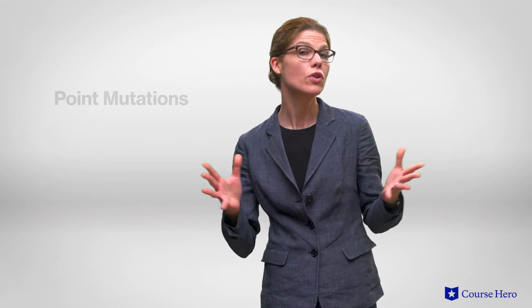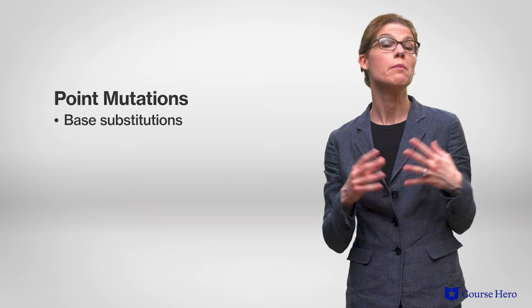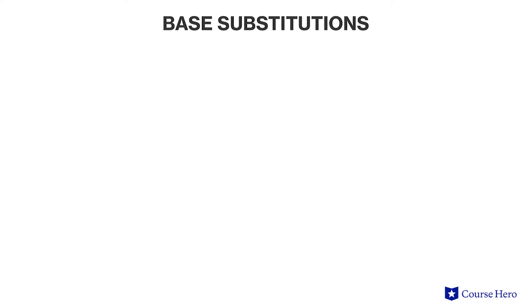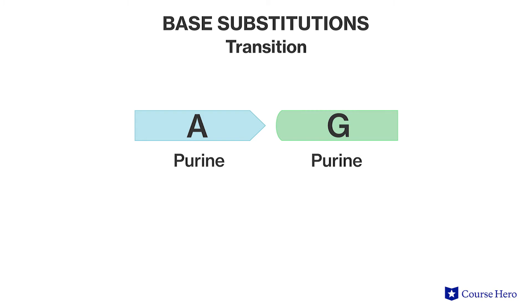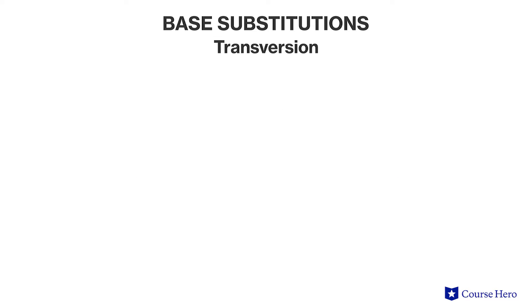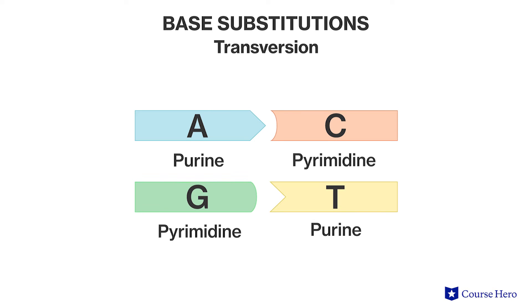Let's look at the molecular nature of mutations next, and we'll start by looking at the main type of mutation: point mutations. The two major categories of point mutations are base substitutions and insertions or deletions. Base substitutions are of two types. In a transition, one base is replaced with another of the same kind, so a purine for a purine or a pyrimidine for a pyrimidine. In a transversion, one base is replaced with another of the opposite kind, so a purine for a pyrimidine or a pyrimidine for a purine.